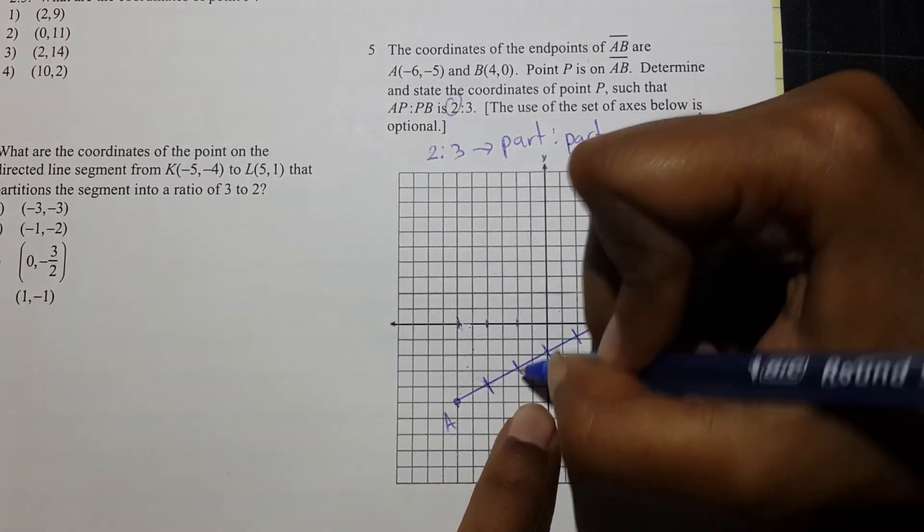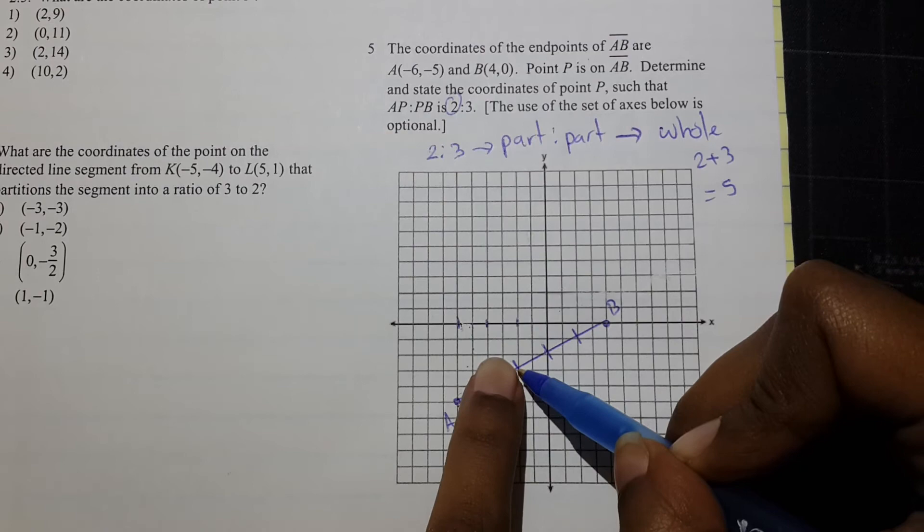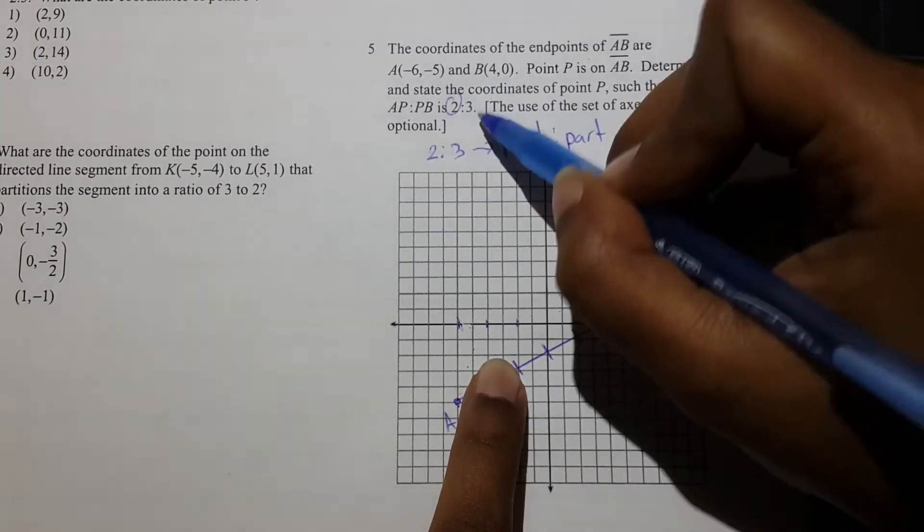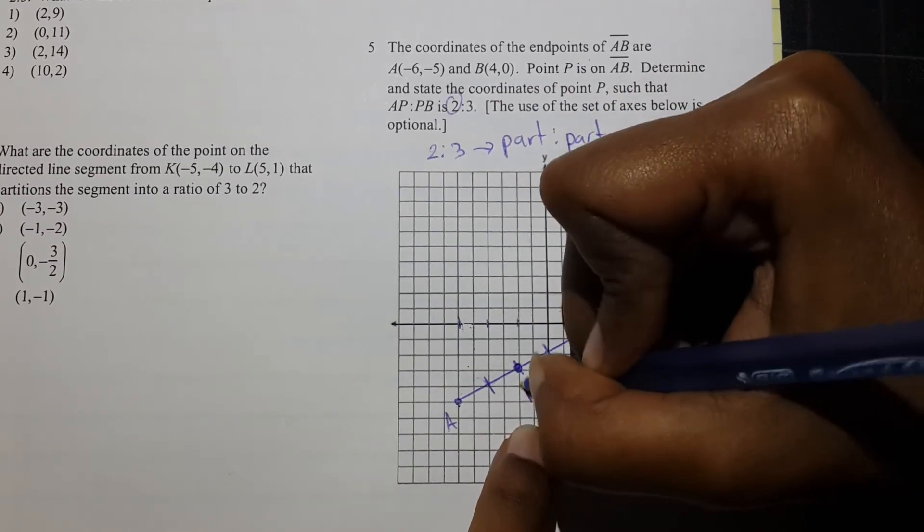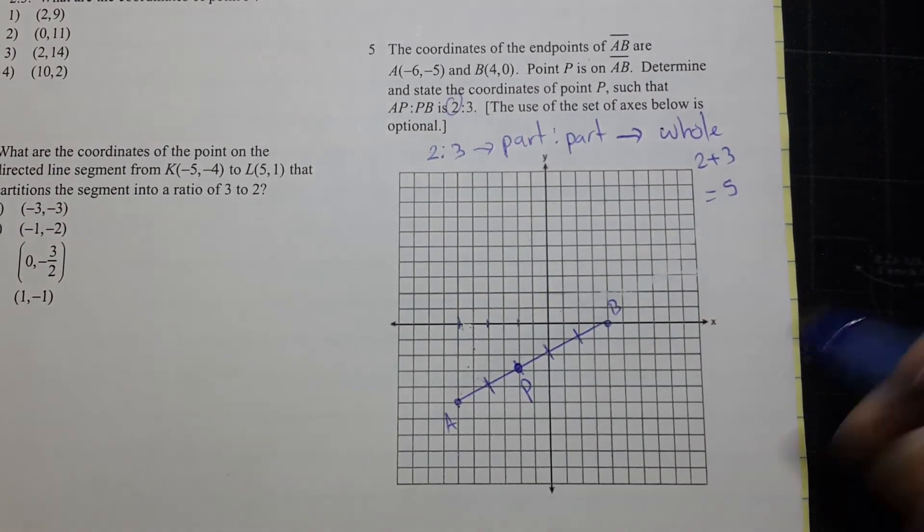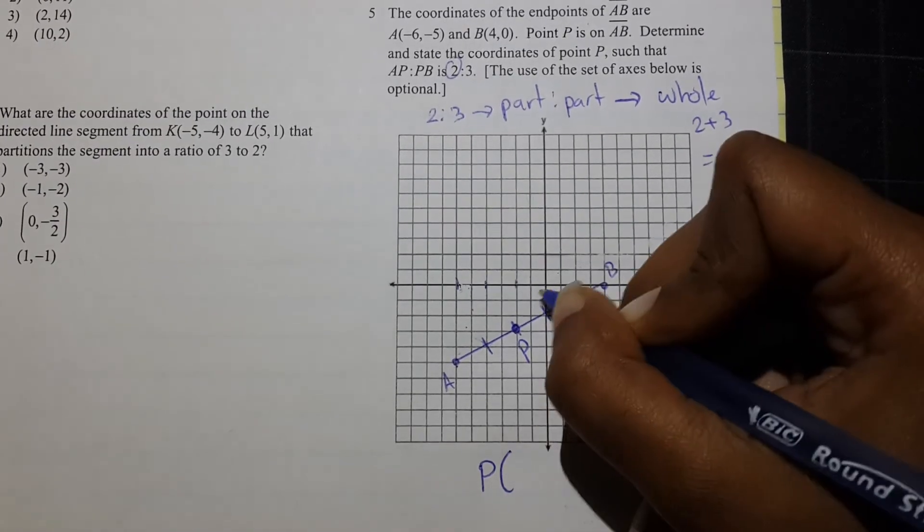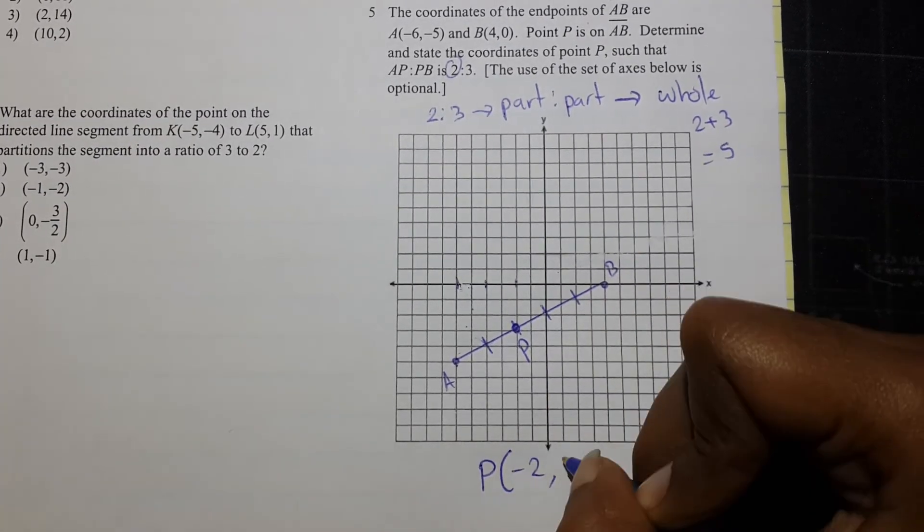and on the right of that should just be 3 parts over 1, 2, 3, which is exactly what we see. So that means this point right here is our partitioning point, point P, and the coordinates for that is going to be negative 2 comma negative 3.